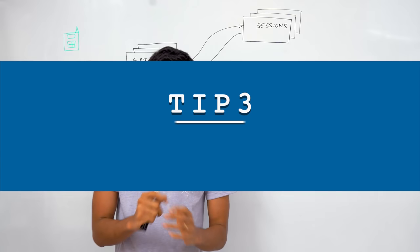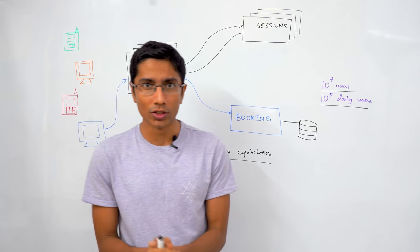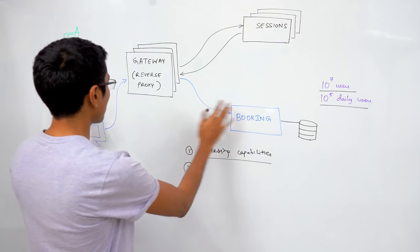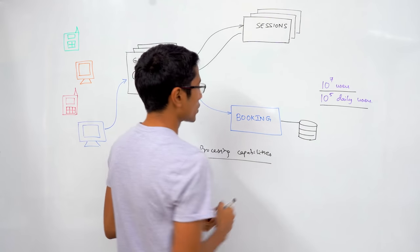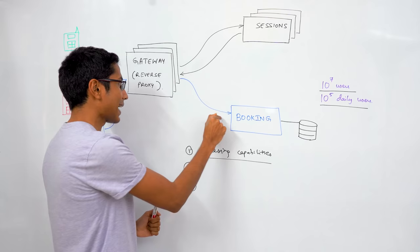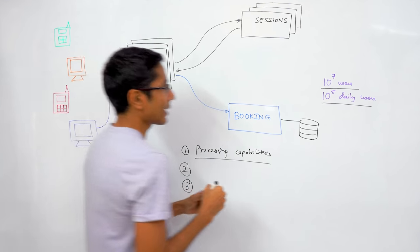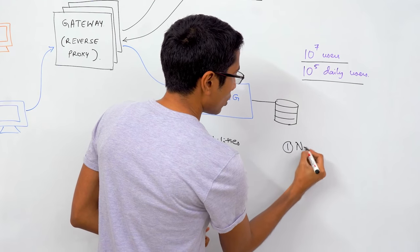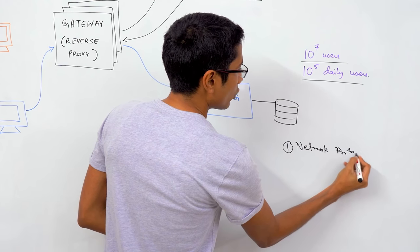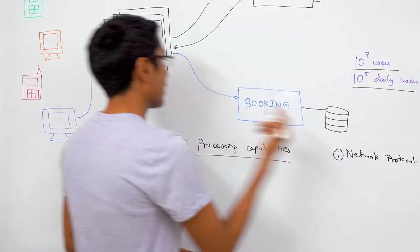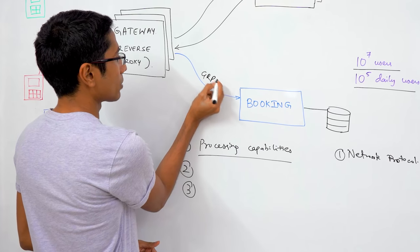The third point is something that I see a lot happening with senior engineers. The weird thing is they make a system, they draw out these boxes, but then they don't know how exactly these boxes are communicating with each other. So one is that they don't know what the network protocol that they should use, but even if they do know about the network protocol, let's say that they say internally I'm going to be using gRPC or something similar.